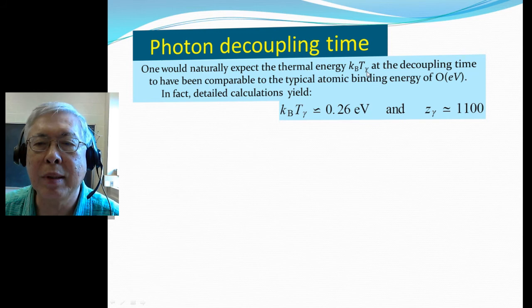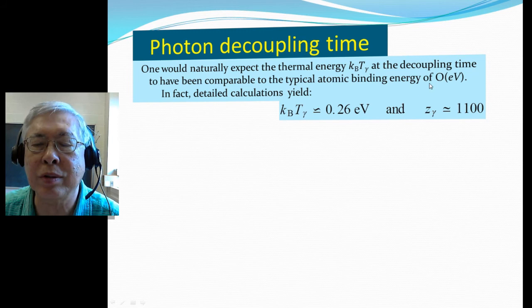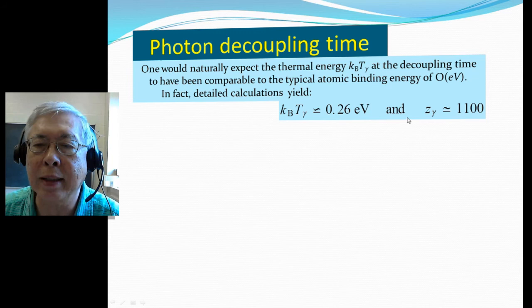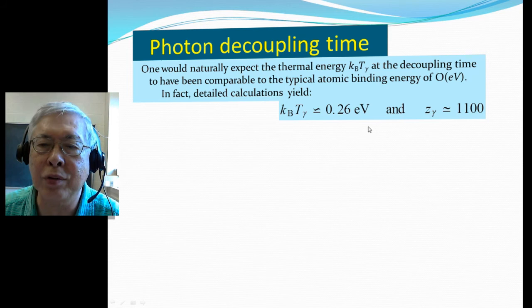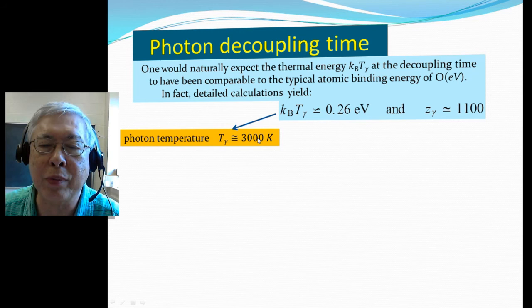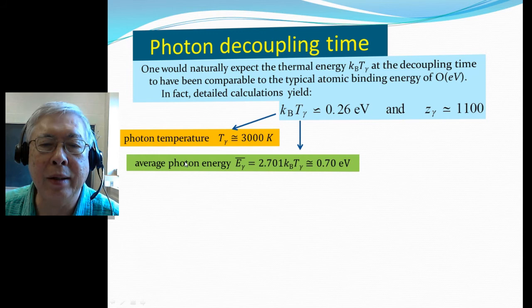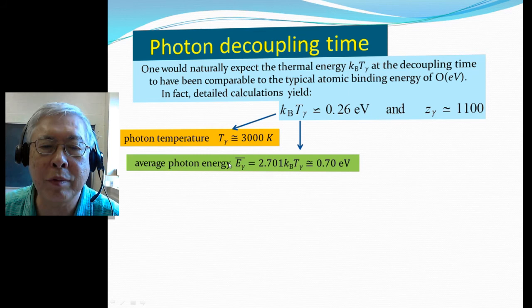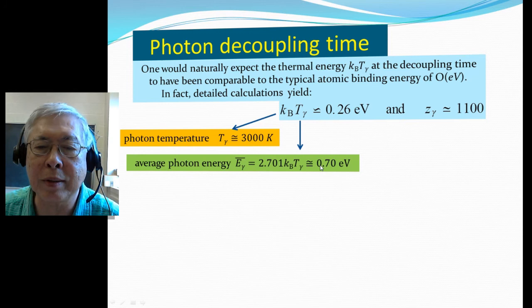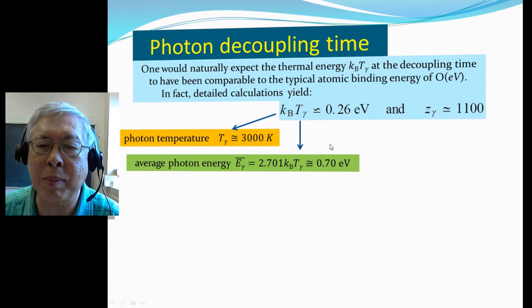We would expect the thermal energy at the decoupling time to have an energy comparable to typical atomic binding energy on the order of electron volts. In fact, detailed calculations show the thermal energy at decoupling time is about 0.26 electron volts, with a redshift ratio factor of 1,100. If kT equals 0.26 eV, dividing by Boltzmann's constant tells you the temperature is about 3,000 Kelvin. The average photon energy for a blackbody spectrum is 2.7 kT, which gives about 0.7 electron volts.